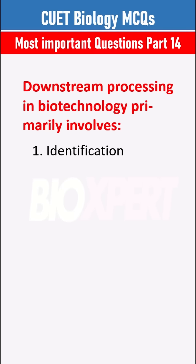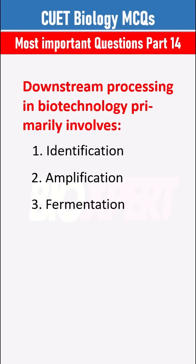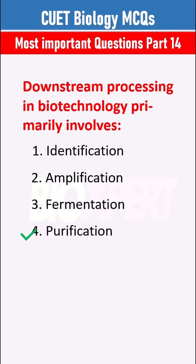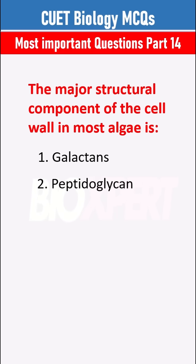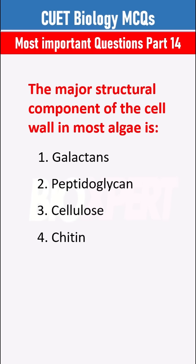Downstream processing in biotechnology primarily involves Purification. The major structural component of the cell wall in most algae is Cellulose.